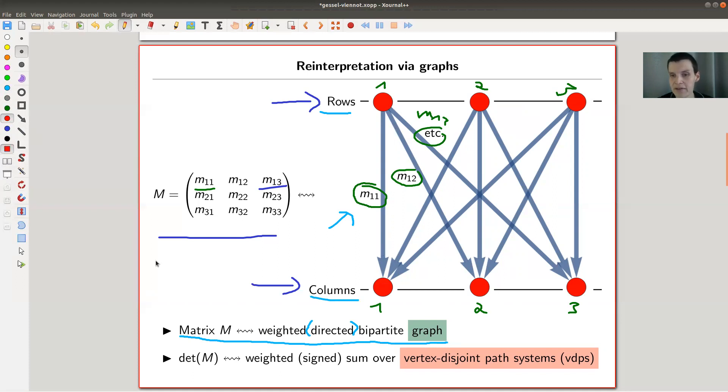And bipartite is this partition into rows and columns of the graph. And what they explain is then the determinant of the matrix is just the weighted signed sum over, whatever, whatever, whatever. It's called vertex disjoint path systems, which I will denote by VDPS. We'll see that in a second in an example.